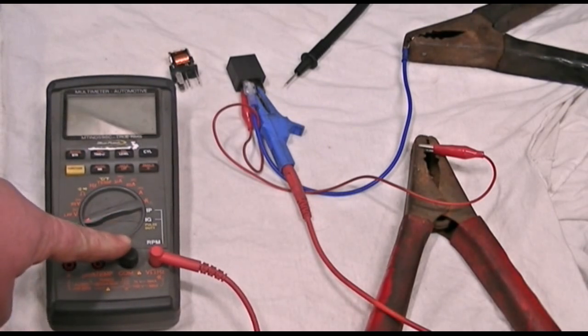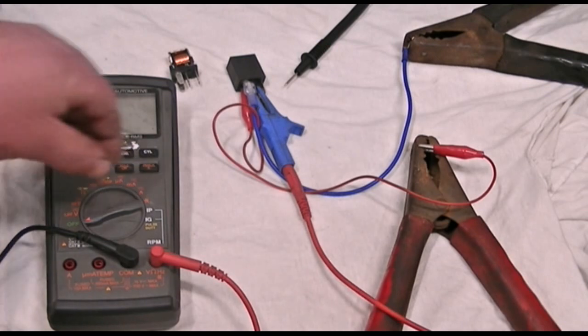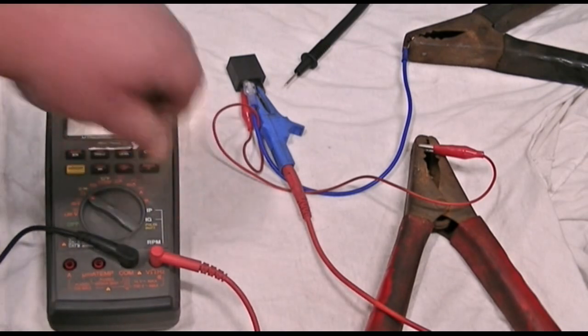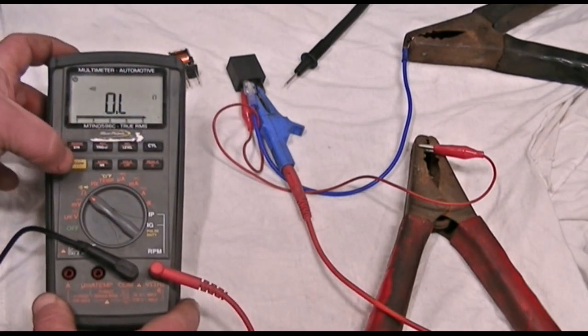First we'll take the ground lead and put it in the black common port. Then we'll take the power lead and put it in volts, ohms, hertz. Next we'll turn our meter to test resistance. Or possibly, if we're not near where we can see it, we can set it up to test for continuity.